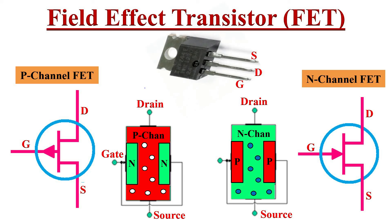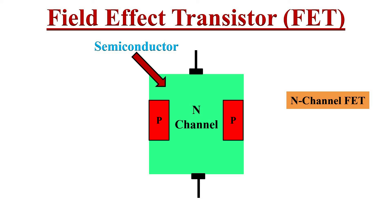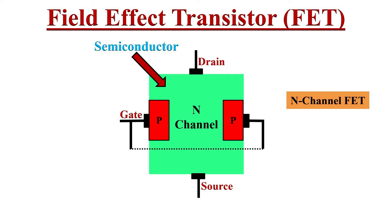That is either by holes in P-channel or electrons in N-channel. For fabricating an N-channel FET, first a narrow bar of N-type semiconductor material is taken, and then two P-type junctions are diffused on opposite sides of its middle part. These form two PN junctions. Direct electrical connections are made at the two ends of the bar — one lead is called the drain terminal and the other is the source terminal. These two P regions are internally connected and a single lead is brought out, which is called the gate terminal.